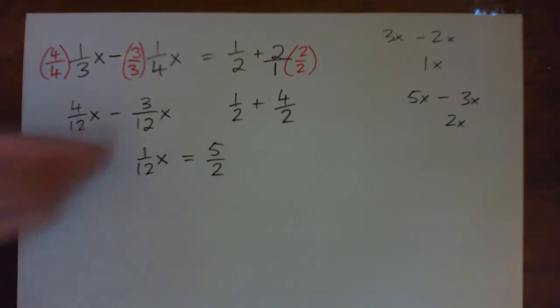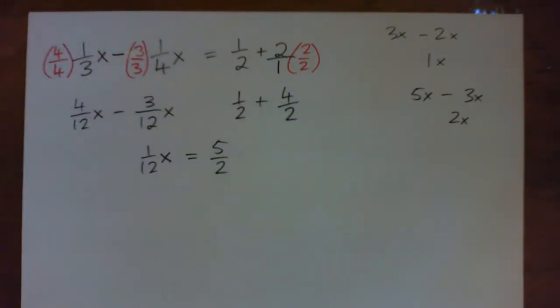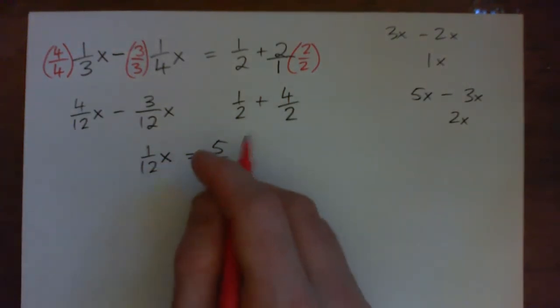Two is the same thing as four halves. One half plus four halves is five halves. What we've done is we've added like terms on both sides: we had x terms on the left, we had numbers on the right. We added like terms and we get this.